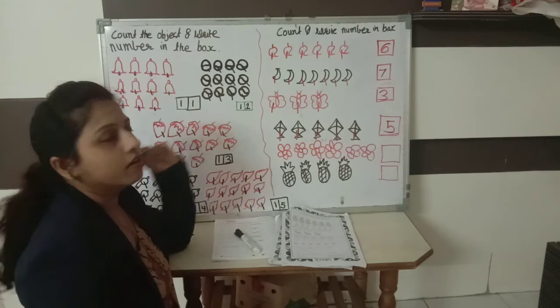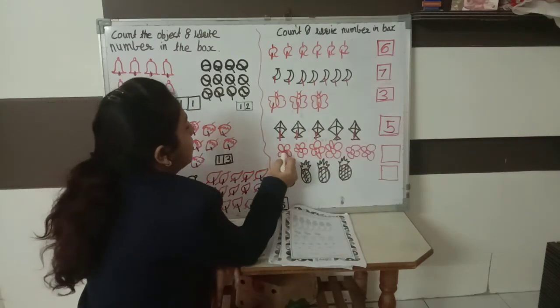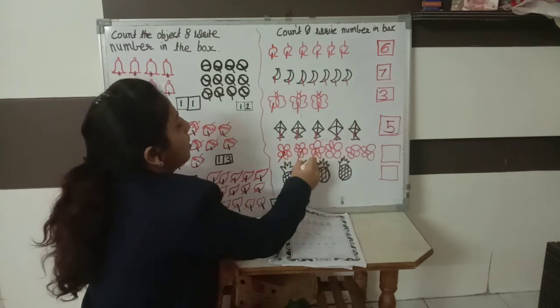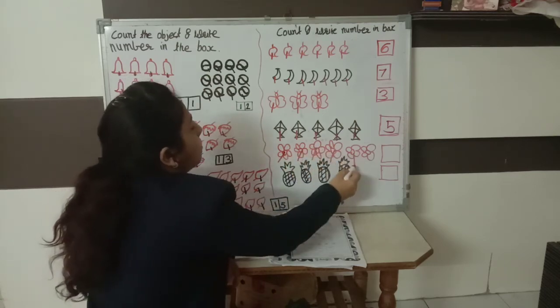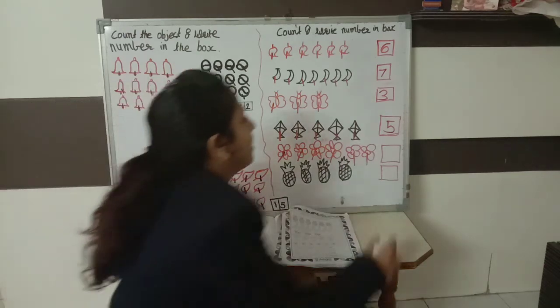Now these are flowers. How many flowers are here? Let's count. 1, 2, 3, 4, 5, 6. How many flowers are there? 6.